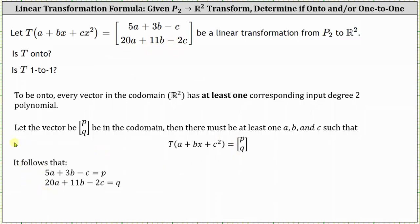From here, if we write the corresponding matrix equation, the coefficient matrix is the transformation matrix. So if we write this in reduced row echelon form, as shown to the right, we can see there is a pivot in every row indicating the transformation is onto.